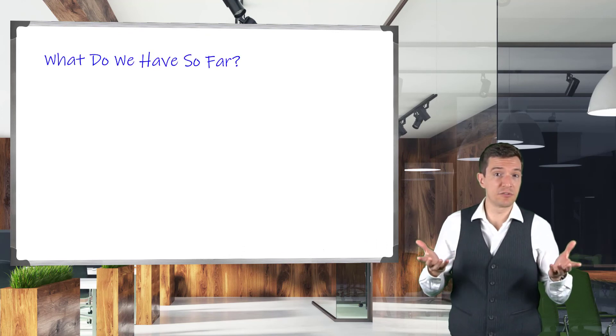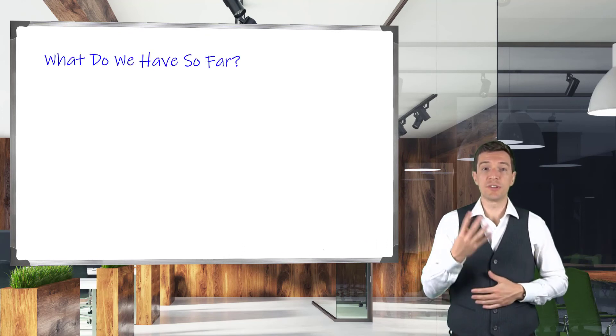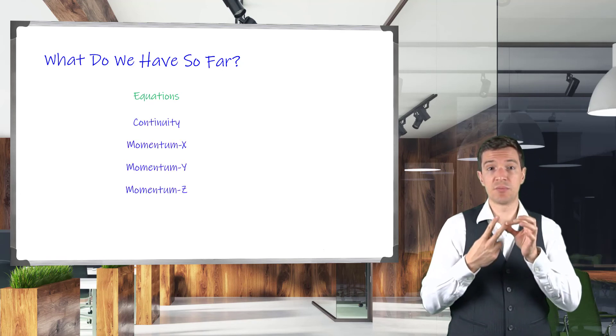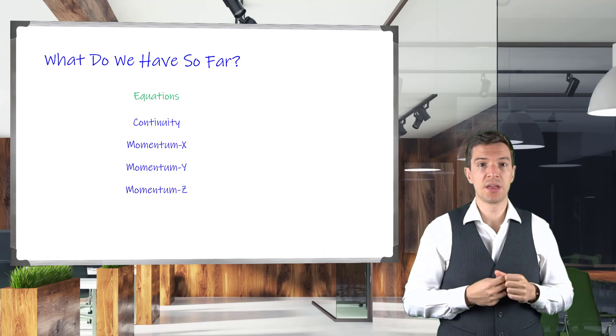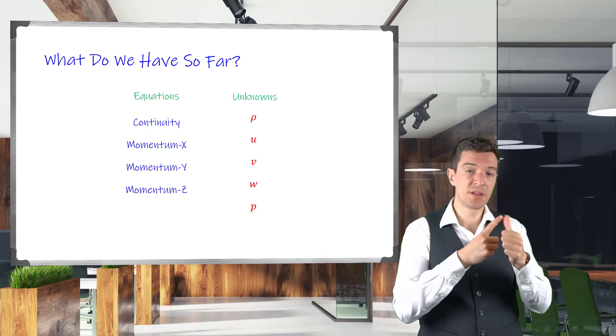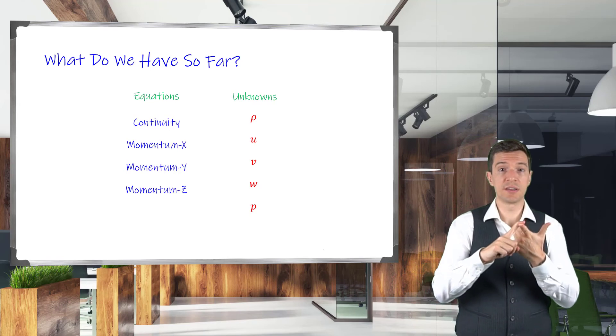So, now let's take a look at what we have so far. Four differential equations, one continuity equation, and three momentum equations. And we have five unknowns: density, three components of velocity, and pressure.